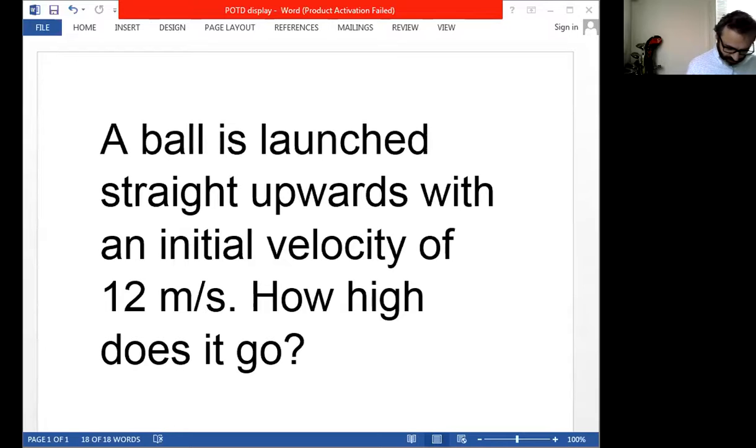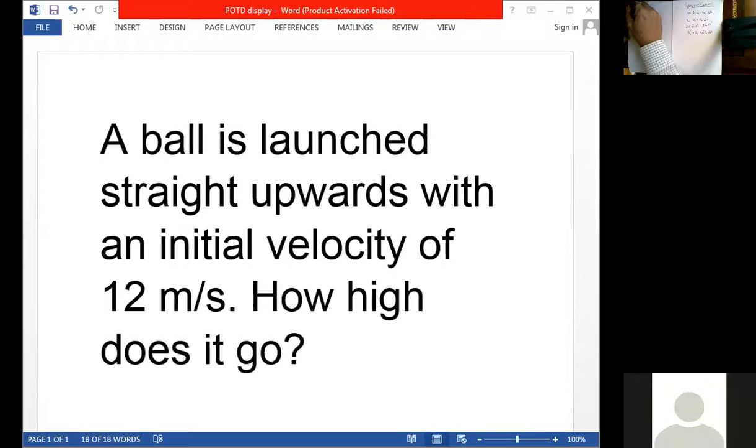This one's a little tricky because it might for a second seem like we don't have enough givens to solve it, but if we think it through we will be able to. Let's see what givens do we have. We have the initial velocity. What's the initial velocity going to be? 12 meters per second. That's its initial velocity and that's going to be positive because it's going to be moving upwards, right? So we don't have to make it negative like we've done in the past if it's falling down.